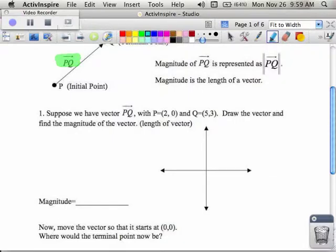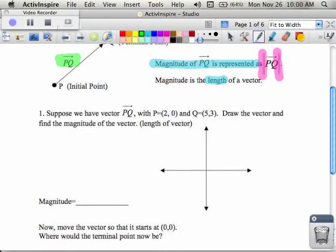Magnitude means the same thing as length. They're going to denote it with a double line indicator that you see on either side of the PQ vector. These double lines mean the length of something.